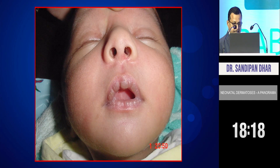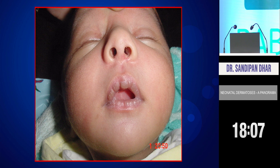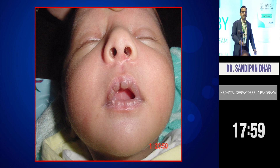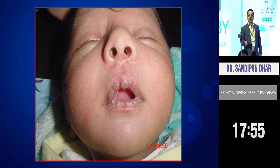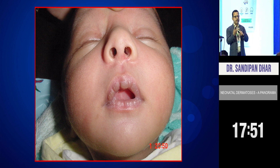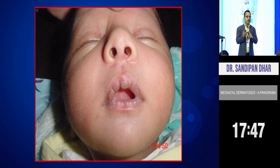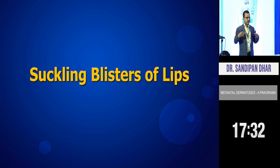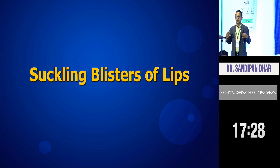Now, some of the physiological skin changes — what is the diagnosis here? Suckling blisters. Excellent. So this is suckling blister; it occurs in utero but presents in the neonatal age. Not only on the lips, you can see suckling blisters over the knuckles, wrist, elbow, knee, and ankle. For all these neonatal physiological changes, the most important thing is reassurance of the parents — reassuring them as well as reassuring pediatrician colleagues at times.